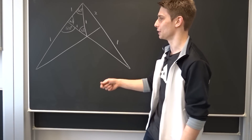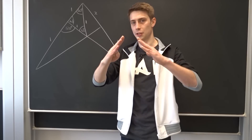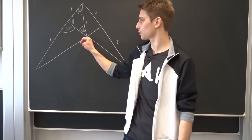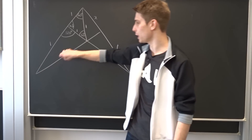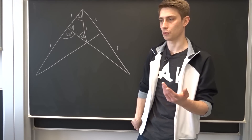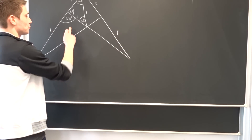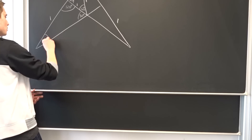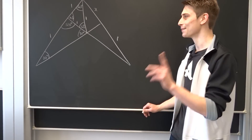Another observation: we have this angle here and next to it two side lengths equal to one, which makes this an isosceles triangle. For an isosceles triangle, the other two angles must be equal. They have to sum to 60 degrees to reach 180 degrees total, so each must be 30 degrees.